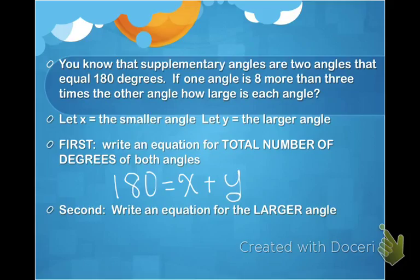Now, if you notice in the word problem, they define the larger angle in terms of the smaller one. They're saying one angle is eight more than three times the other. So I'm going to say my larger angle is eight more, which would be eight plus, three times my smaller angle, which is x. Now I have a system of equations I can solve.